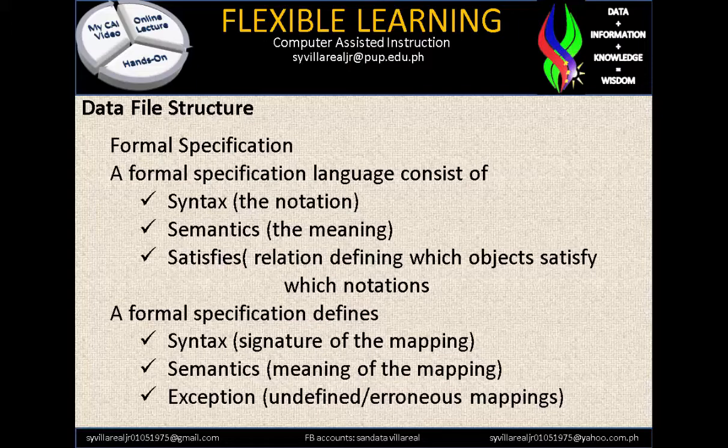What are exception examples? For example, you run the program, it runs but it displays an error — that's what you call an exception error. That is undefined, erroneous mapping. When we say undefined: you define integer but it uses float, or you define character but you needed integer. It will run your program but it will interpret a missing or linking error.